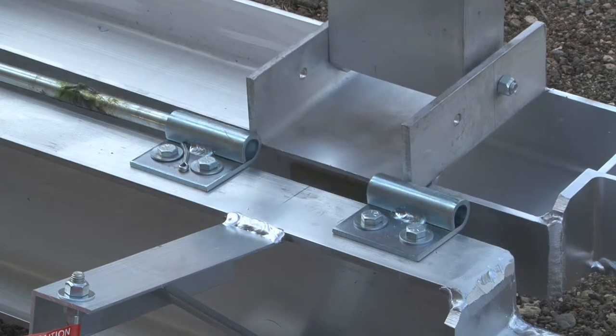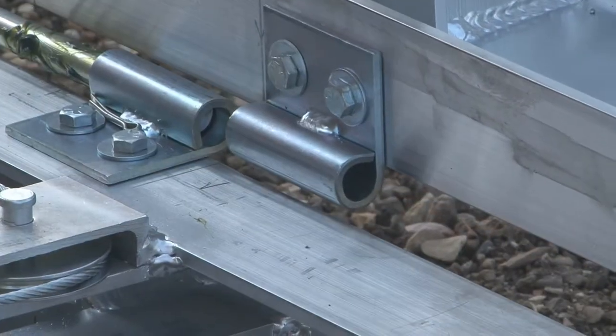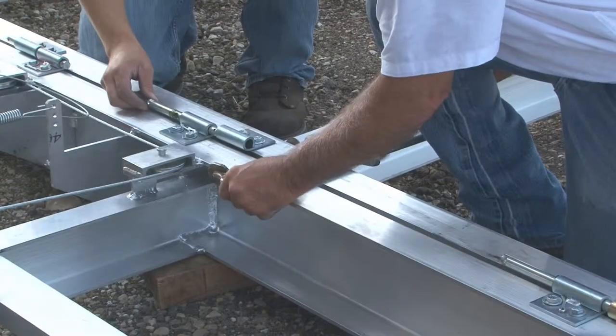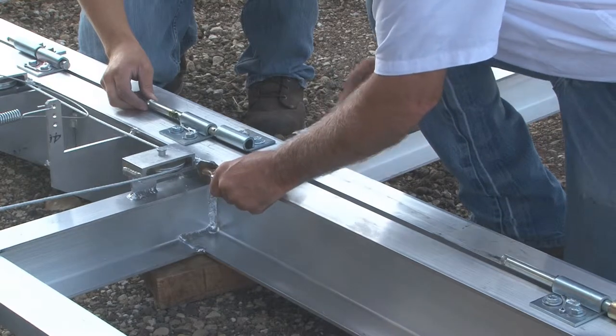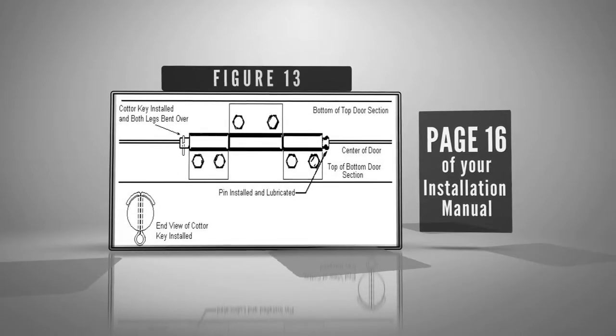Note: it's sometimes helpful to lift the top of top section to align hinges. In some cases, it may also be necessary to loosen hinges in order to align and then re-tighten after hinge pins are installed. Install cotter key in hinge pin and bend end over. See Figure 13.